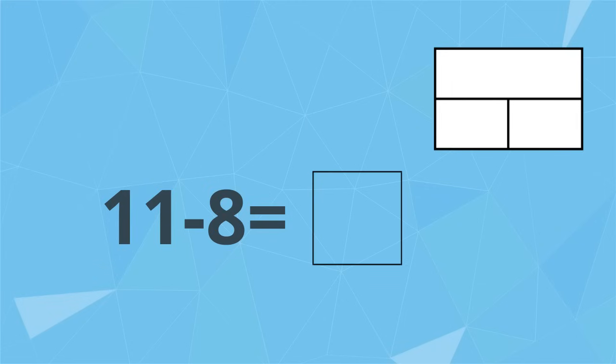Let's try one more. 11 take away 8. Because it's subtraction, 11 is the whole, 8 is one of the parts, and we are missing the other part.